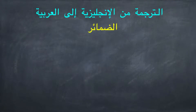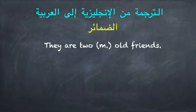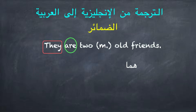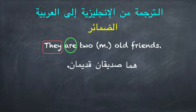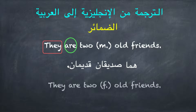تعالوا أعزائي نترجم جملة تبدأ بضمير: 'They are two masculine old friends'. 'They' = هما. تذكروا أن الفعل المساعد 'are' لا يترجم. نبدأ بـ'friends' = صديقان، لأن في العربية الموصوف يأتي قبل الصفة بخلاف الإنجليزية. 'Old' = قديمان. إذن نقول: وهما صديقان قديمان.